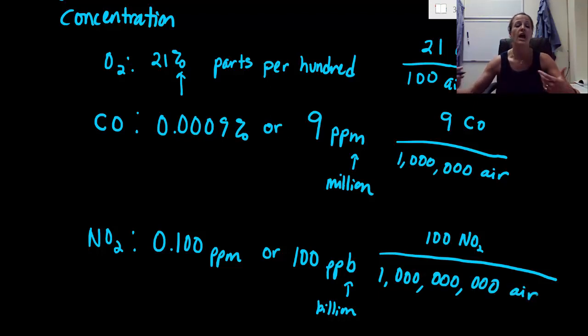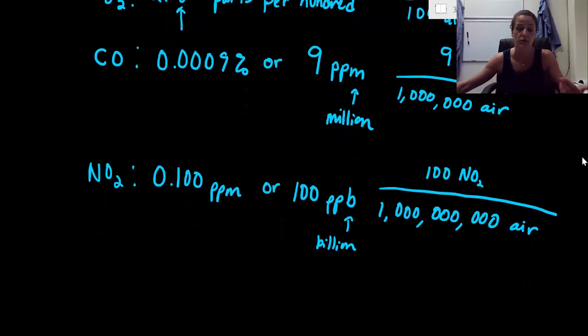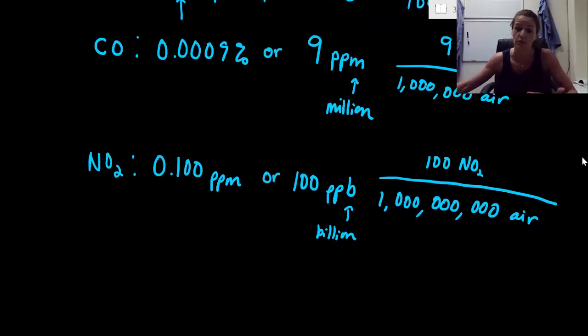So what I need you to be able to do is to look at all these units - percent, ppm, ppb - and to very, very quickly convert them into a fraction so that you are automatically in your head understanding what I'm saying in a ratio in terms of pollutant per total air concentration so that we can quickly go through and discuss all these different pollutants that actually mean something, in a substantial way.